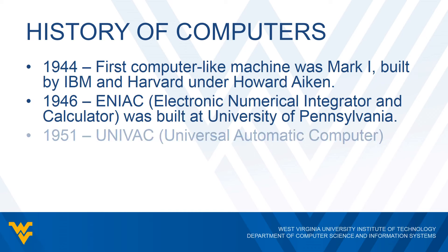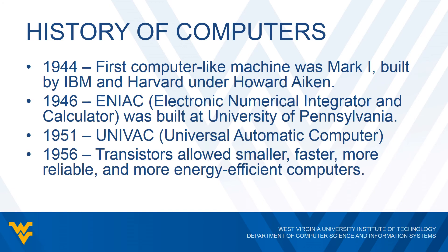This was improved even further in the 1950s. In 1951 the UNIVAC — the Universal Automatic Computer — was designed. Then in 1956 the addition of transistors allowed computers to become smaller, faster, more reliable, and more energy efficient. Back then a computer was not something you could put on a desk — it would take up an entire room and had probably about the processing power of a typical calculator today. With transistors these machines became smaller and more compact, and now we basically have a computer in the palm of our hands.